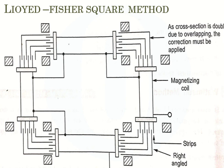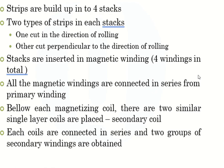This is the circuit of a Lloyd-Fisher square. You can see this is a complicated circuit, but when explaining the parts it will become easy for you. First, we can see the parts.